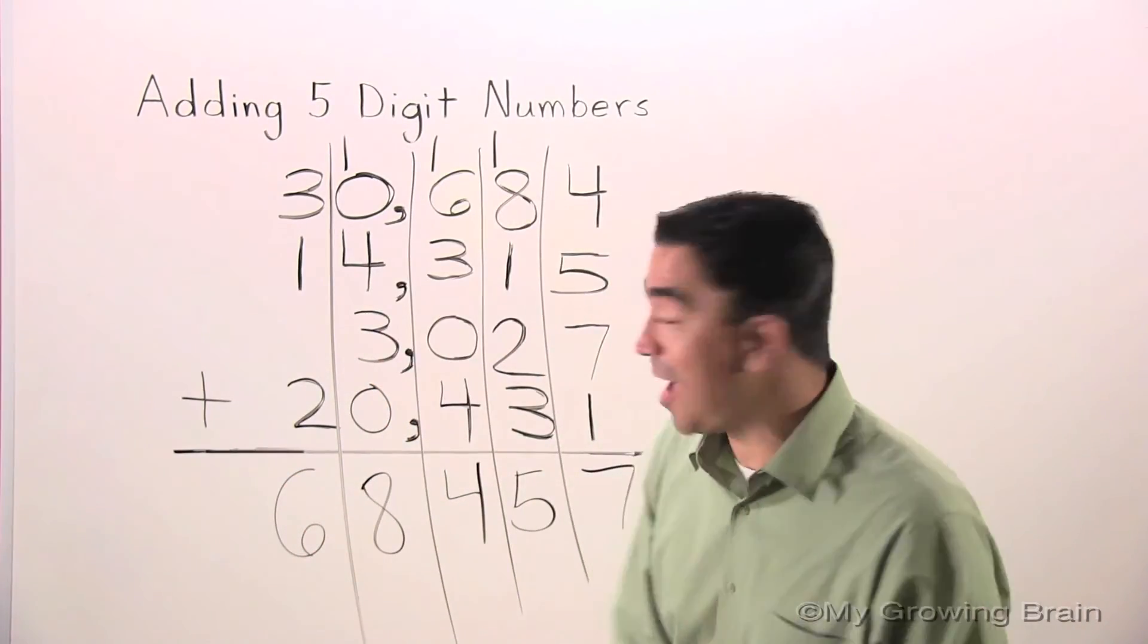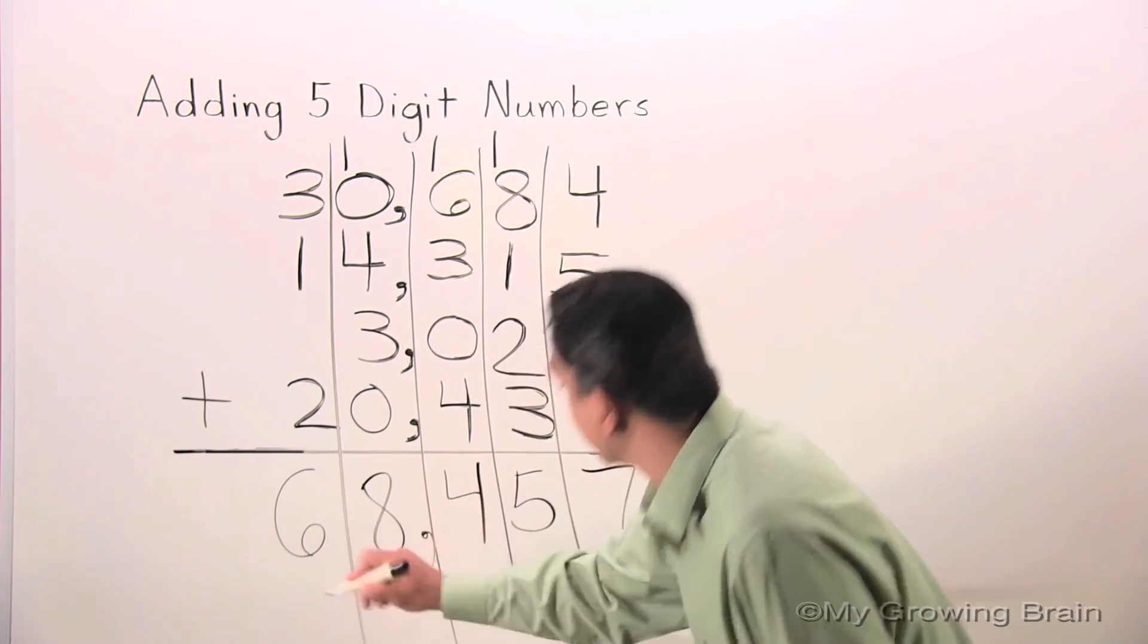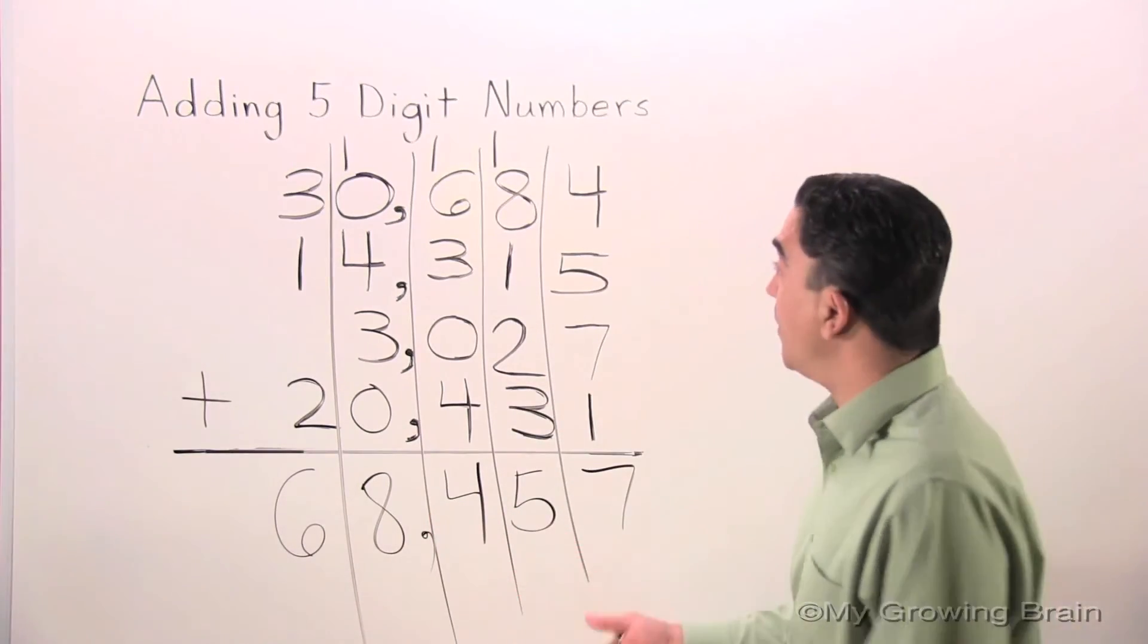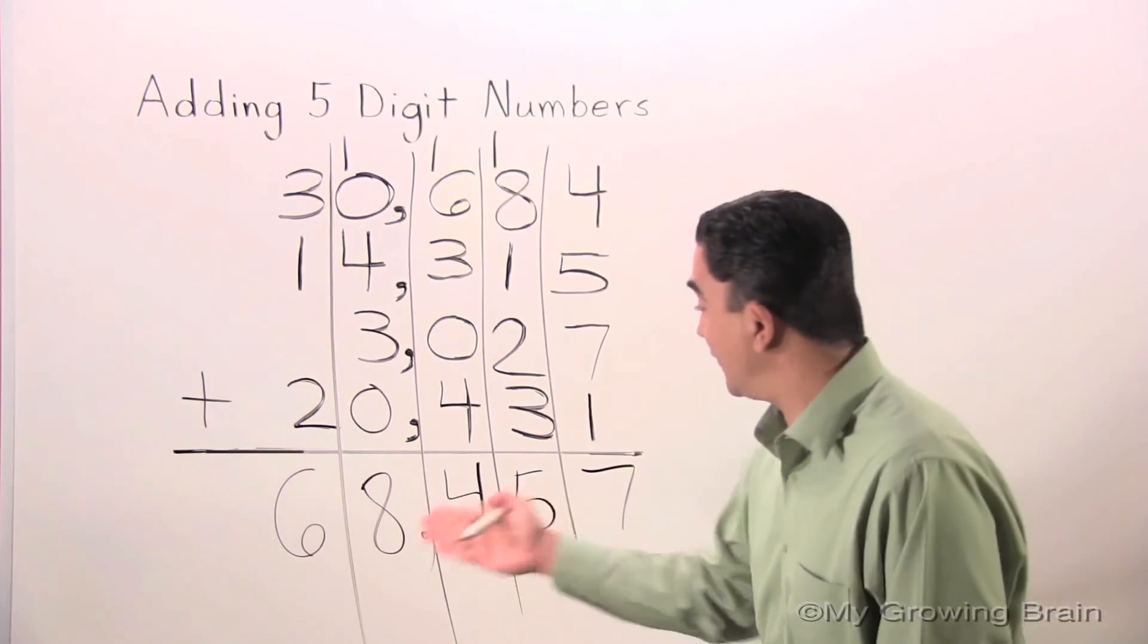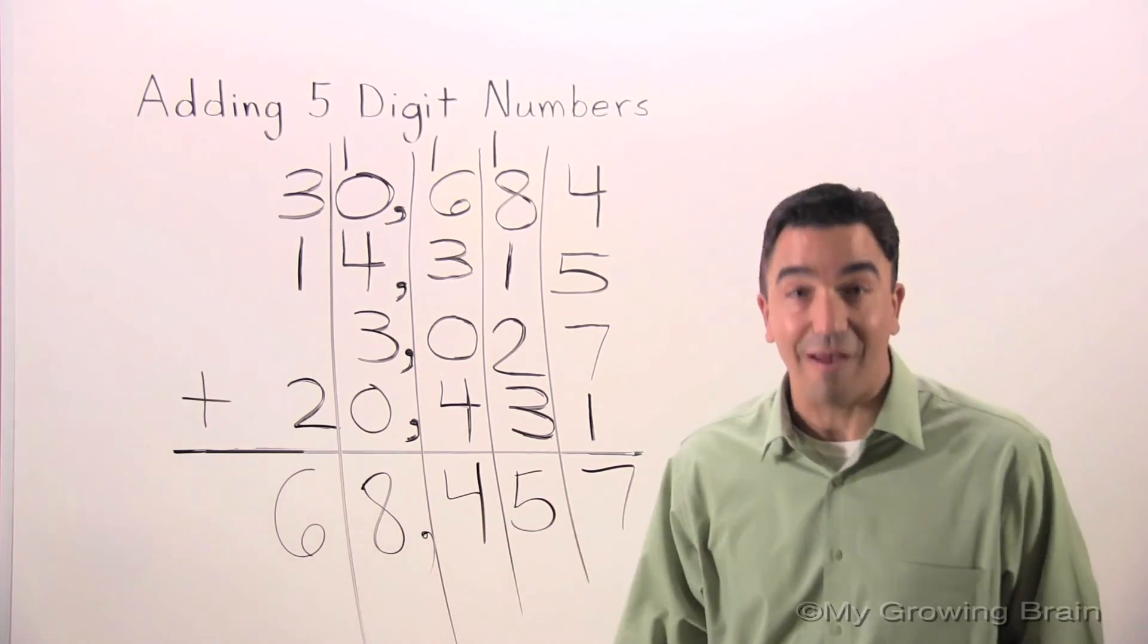Don't forget your comma. The sum of this addition problem is sixty-eight thousand four hundred fifty-seven.